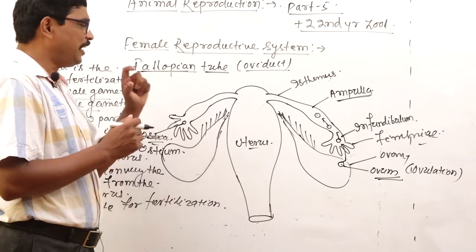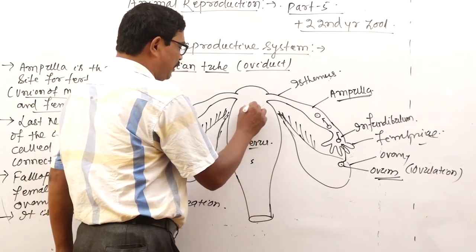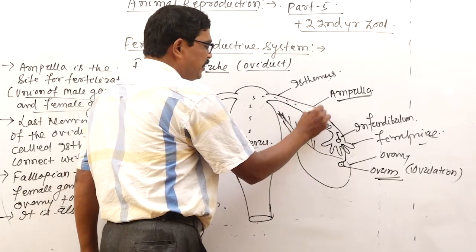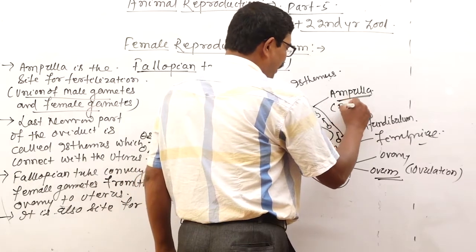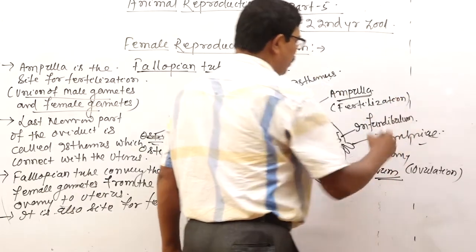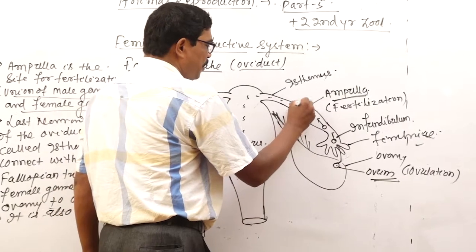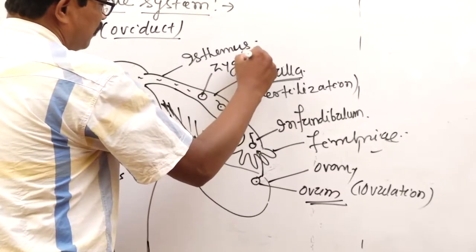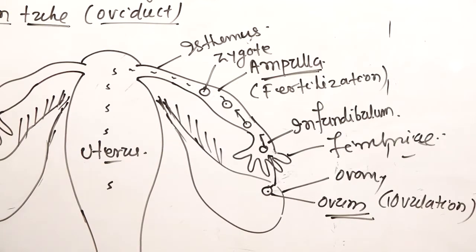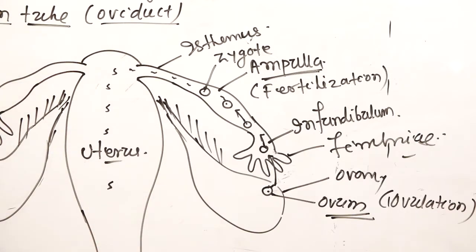Fertilization actually takes place in the ampulla. Sperm enters the uterus and travels through the fallopian tube and reaches the ampulla — the site for fertilization. After fertilization, it forms the zygote. Then the zygote divides and re-divides to form a multicellular embryo, which then moves towards the uterus.